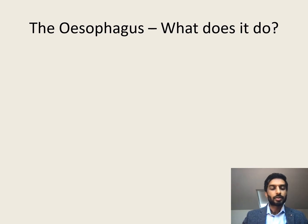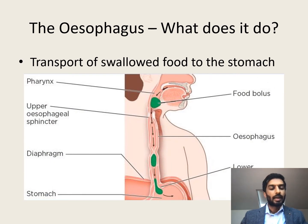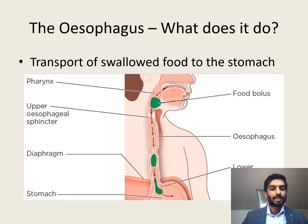Before moving on to the symptoms, we need to know what the normal function of the esophagus is. Basically the esophagus is just a pipe responsible for the transport of swallowed food and drink into the stomach. This partially happens via the effect of gravity but also through the actions of muscles in the wall lining the esophagus. These contract sequentially in a process called peristalsis, which pushes the swallowed food down into the stomach.